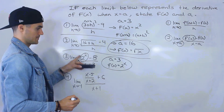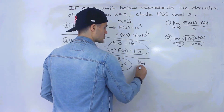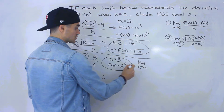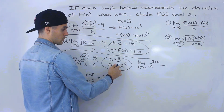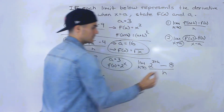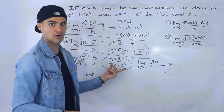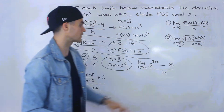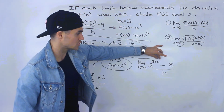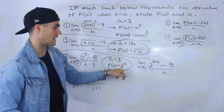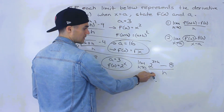Now, if limit three were stated in the first definition format instead, we'd have the limit as h approaches 0 of f(3+h) minus f(3), all over h. That would be 2^(3+h) minus 2³ — which is 8 — all over h. It's a little tougher to identify the function from that format, but you'd still notice 3+h, giving a = 3, and recognize f(x) = 2^x since 2³ = 8.